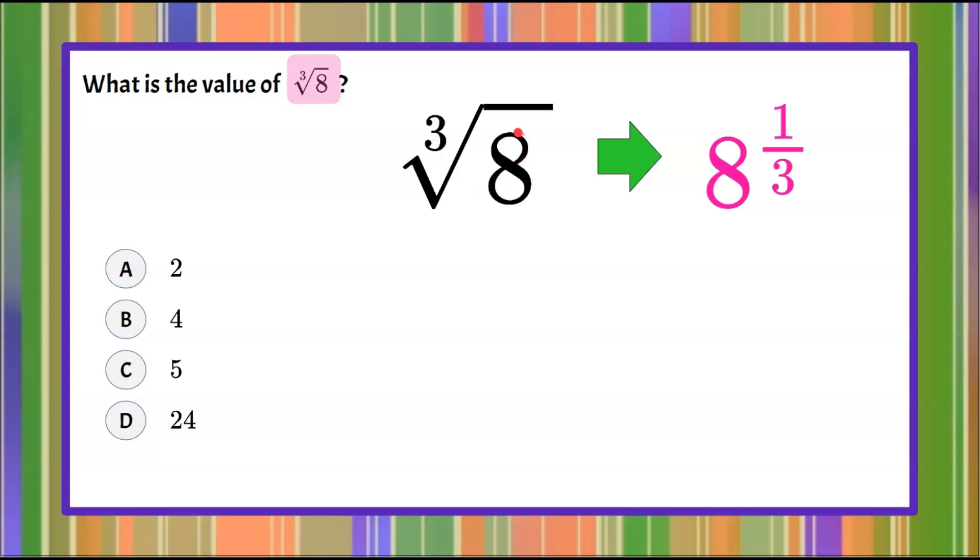So I'm going to rewrite this 8, this radicand, as a product of factors. So I can do that by saying that 8 is a product of 2 times 2 times 2 or 2 cubed. So 2 times 2 is 4, 4 times 2 is 8. So this is what we call a perfect cube because all of the factors when put in factored form, the prime factorization is 2 times 2 times 2, which can be written as 2 cubed.